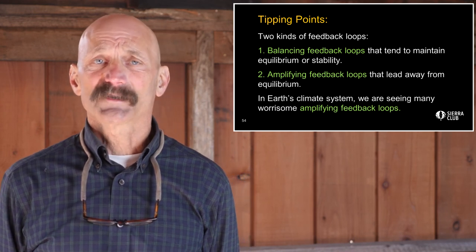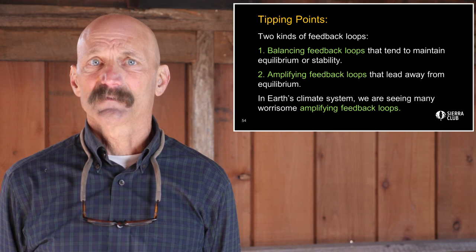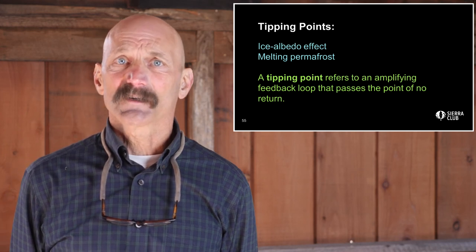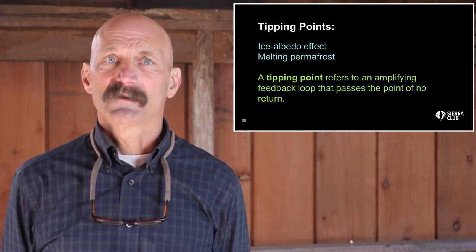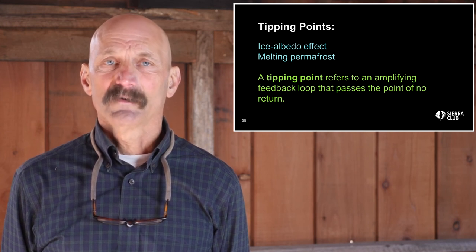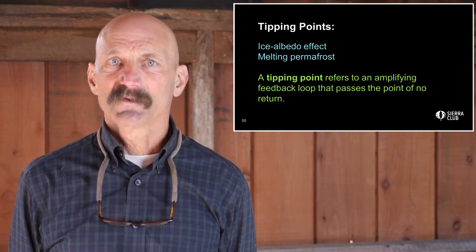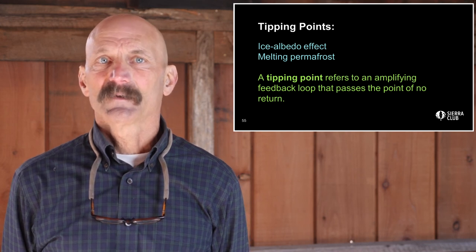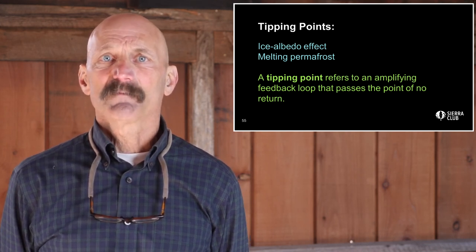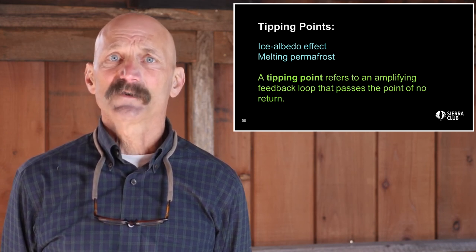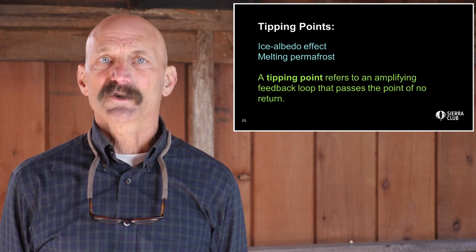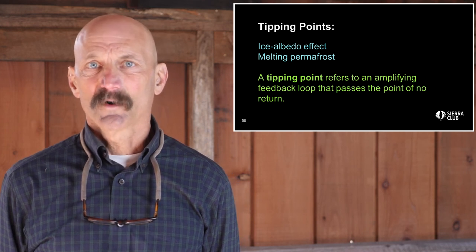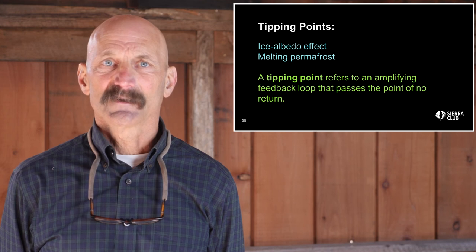In the Earth's climate system, we are seeing many worrisome amplifying feedback loops. Increased temperatures in the Arctic cause increased melting of sea ice, which exposes more dark water, which absorbs more heat, which causes temperatures to increase even further, which causes more ice melt — and on and on in a vicious cycle. Consider melting permafrost: as temperatures increase, permanently frozen tundra starts to melt, which causes the release of both CO2 and methane, which causes additional warming, which causes additional CO2 and methane release, and so on.